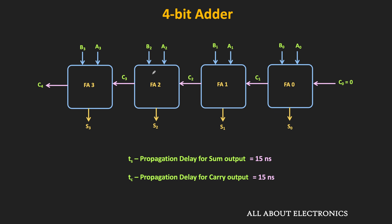For example, FA3 cannot perform valid addition until carry bit C3 is available, and C3 depends on FA2, which in turn can only perform valid addition after C2 is available. Because of propagation delay, each full adder must wait until all previous full adders complete their addition and generate their carry output. FA0 generates its sum and carry after 15 ns, then FA1 must wait until C1 is available before generating S1 and C2.